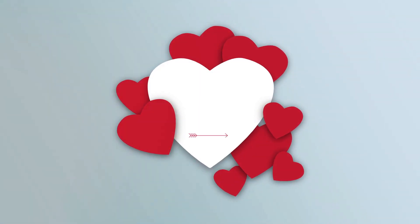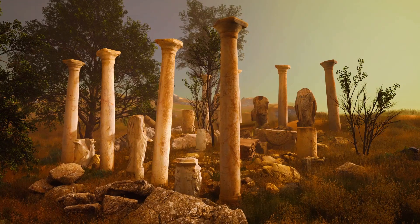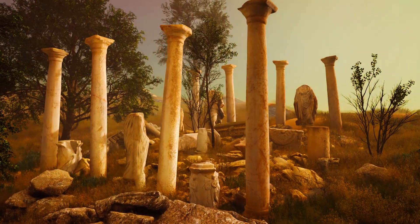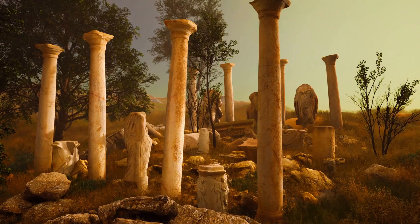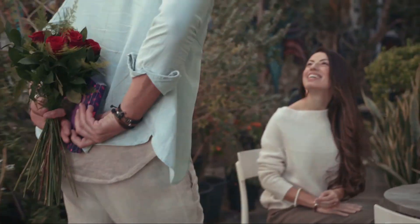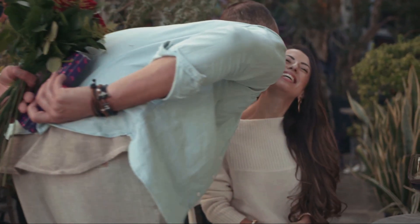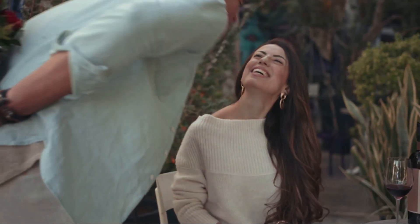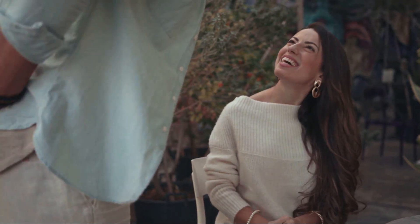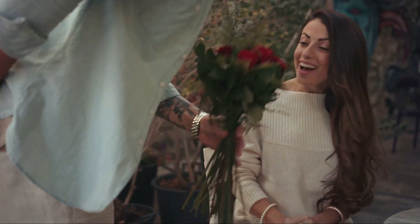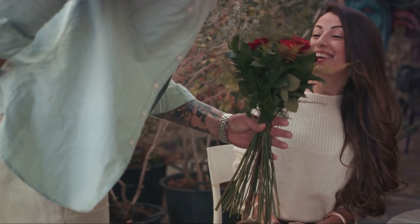Our story begins in ancient Rome with a festival called Lupercalia. Held in the middle of February, Lupercalia was a celebration of fertility and springtime, but it wasn't all roses and chocolates. In fact, it involved animal sacrifices and matchmaking lotteries that today might seem a bit unconventional.